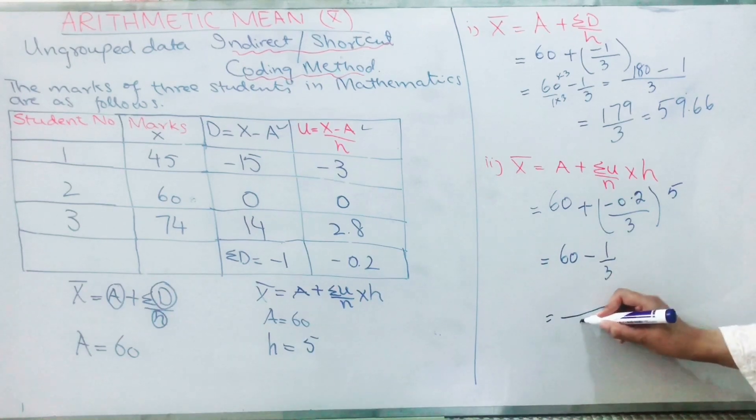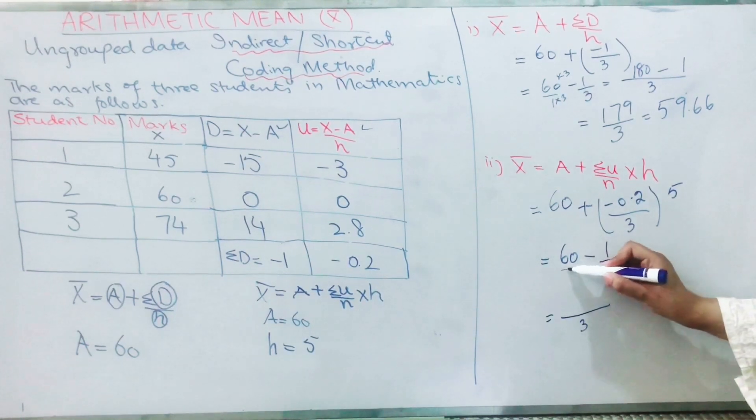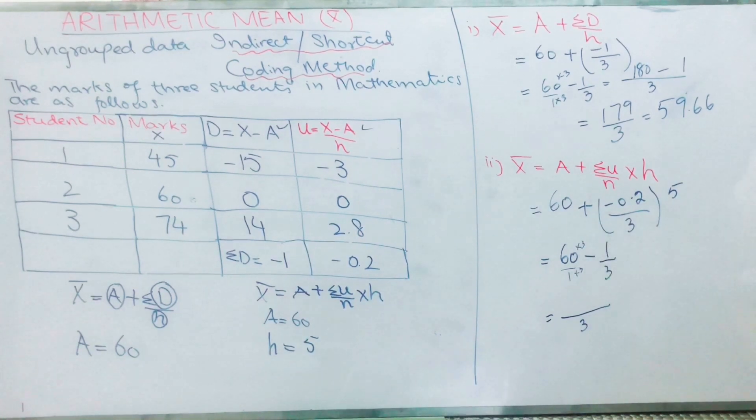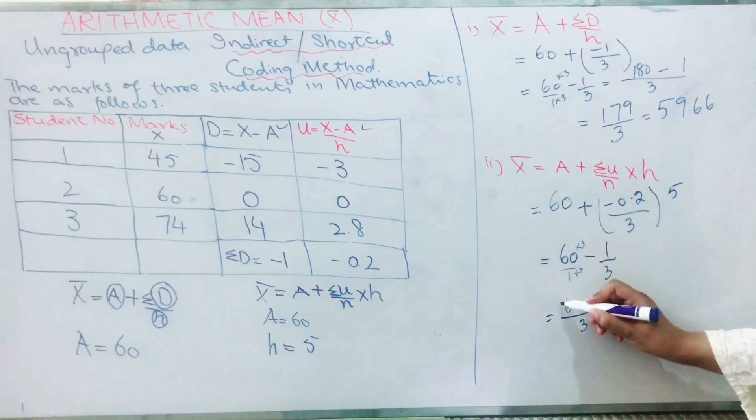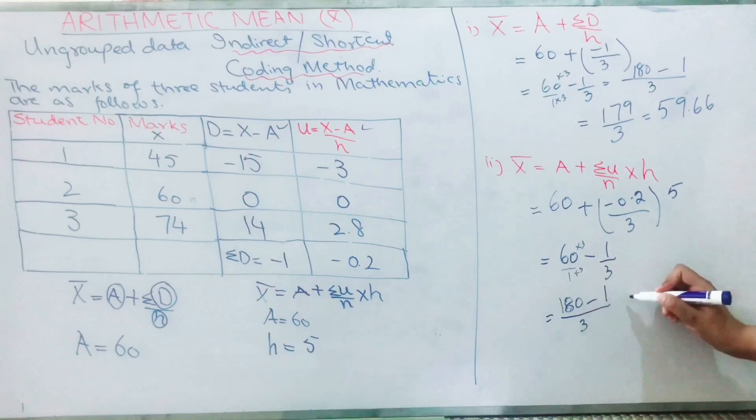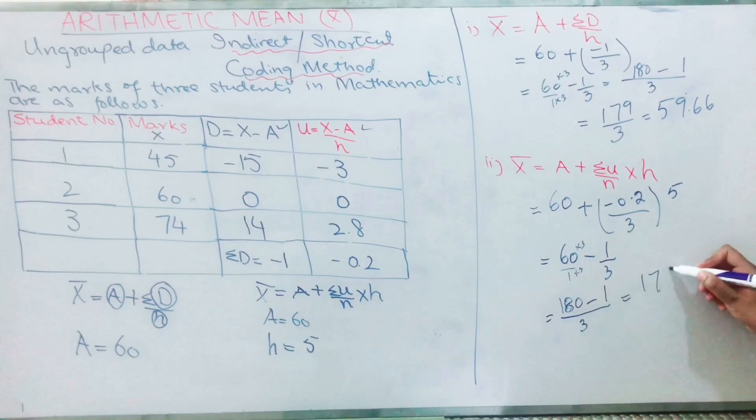60 plus minus is minus. Plus minus is minus. 5 multiplied with 0.2 is 1 by 3. Again you will take the LCM, that will be 3, and here it is 1, so it will be multiplied with 3 in the numerator. 60 times 3 is 180 minus 1, that equals 179 by 3, which is again equals to 59.66. So if you follow any method, whether it is indirect or direct method for ungrouped data, you get the same answer.